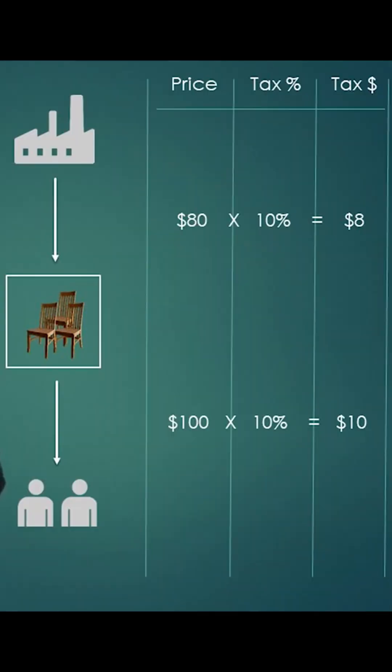There is also one more thing. As a store, we buy the shares from a factory that's also inside the country, and we buy them for 80 USD each. So whenever we buy a share from the factory, we pay 80 USD for the price and also 10% taxes, which is 8 USD. So we have collected 10 USD taxes from the customer, but we have also paid 8 USD taxes to our supplier. The balance is only 2 USD, and this is what we have to pay to the government.